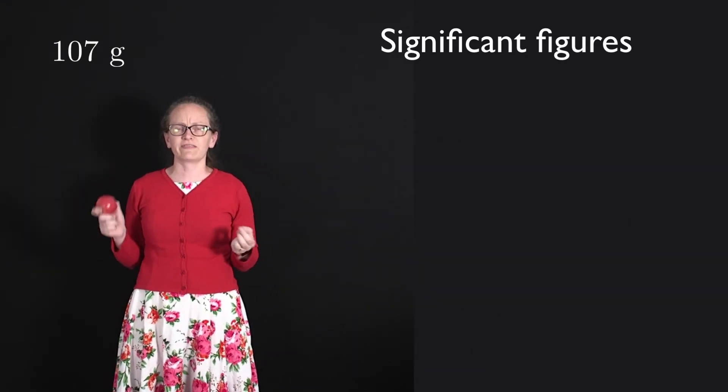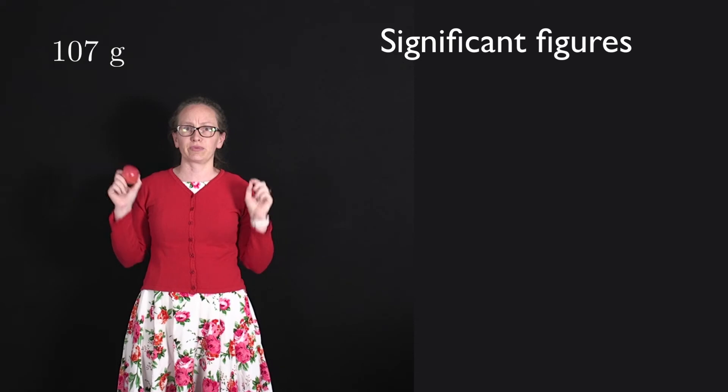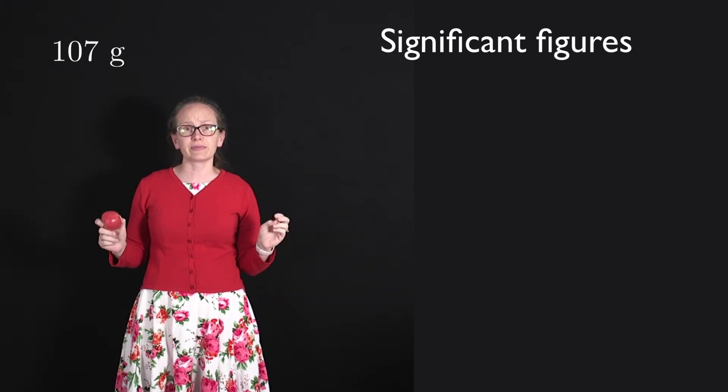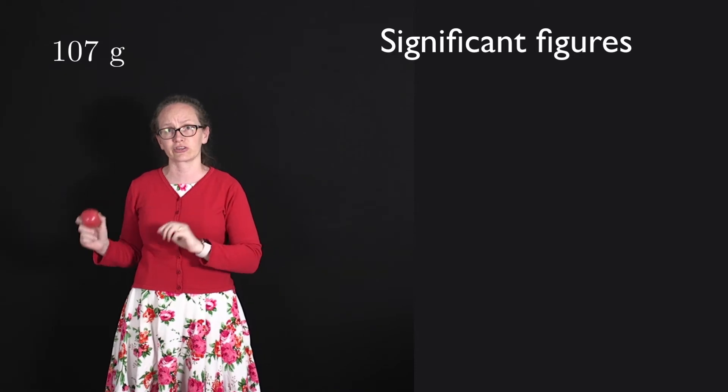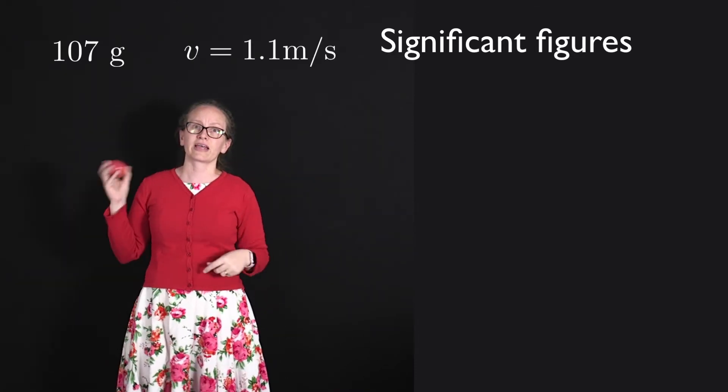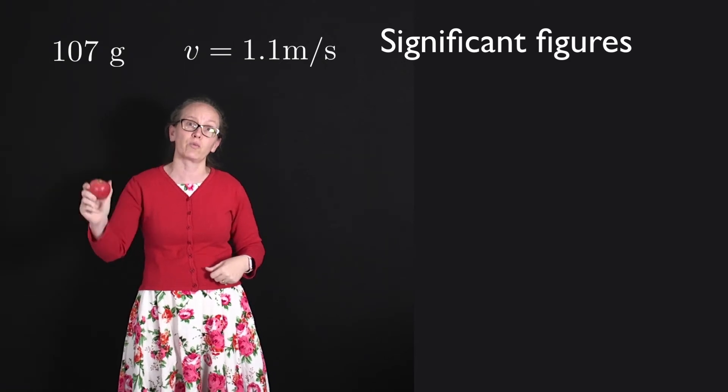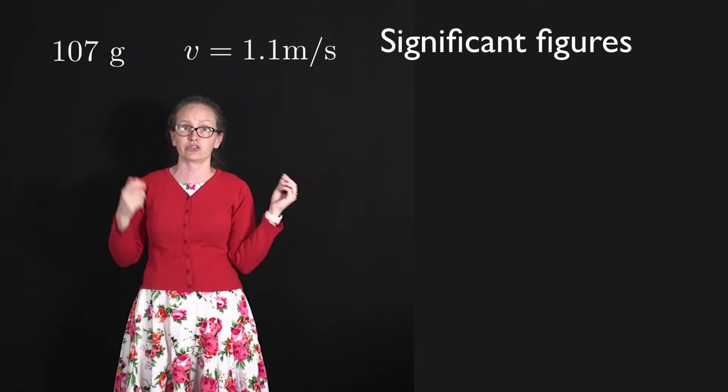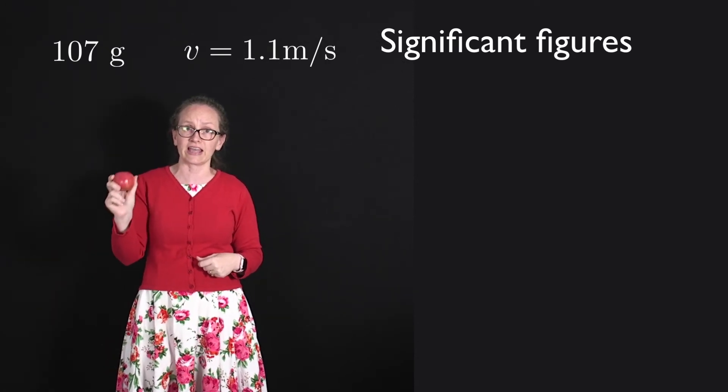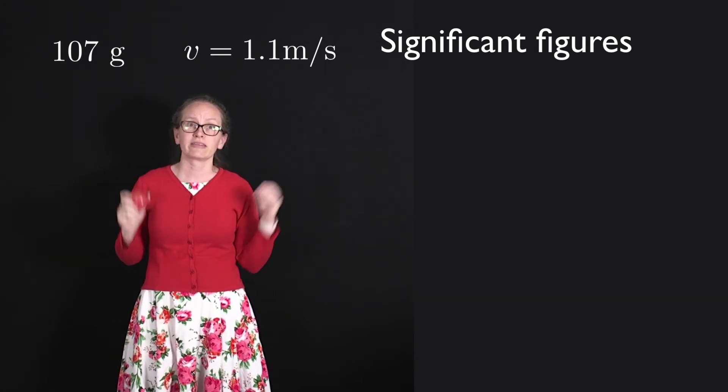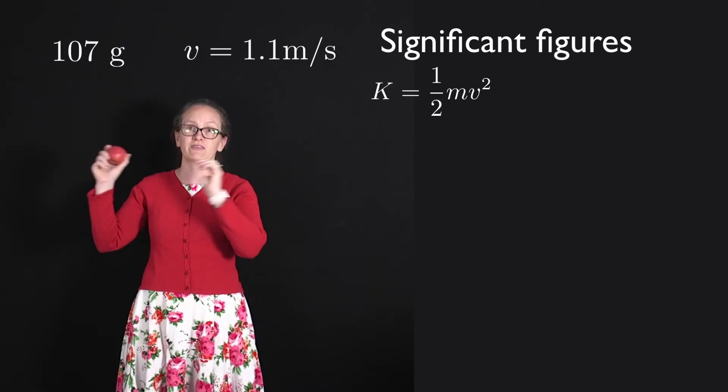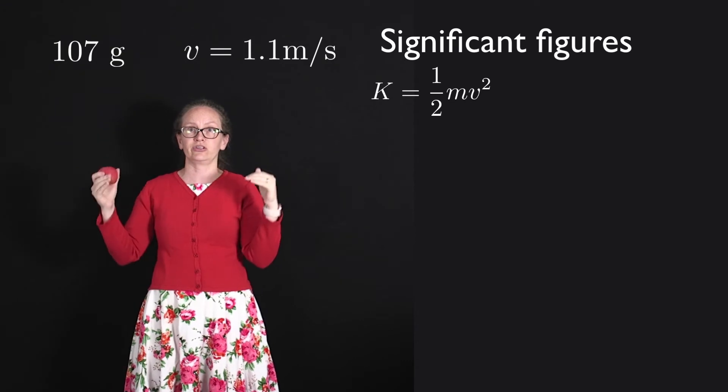Now because the significant figures indicate the precision with which we know a piece of data, this has implications for when we're doing calculations on the data. So for example, if I was throwing this apple and I measured its velocity to be 1.1 meters per second, so I know its velocity to two significant figures. If I was asked to calculate the kinetic energy of this apple, then I'd need to use my equation that the kinetic energy is equal to a half mv squared, and I'll substitute into that.